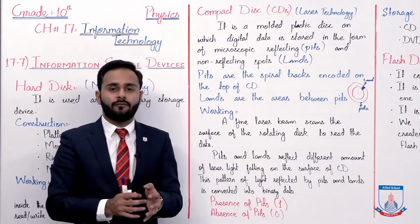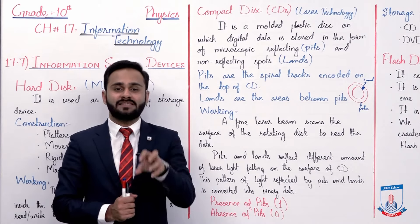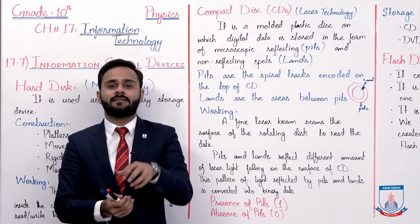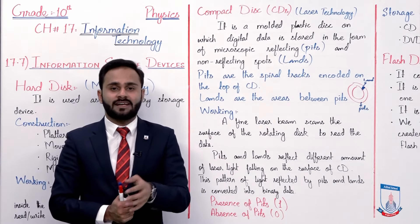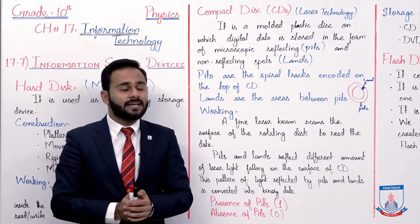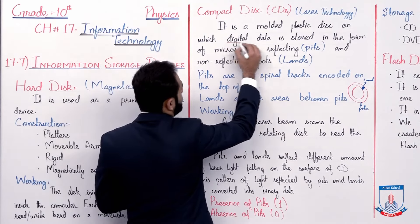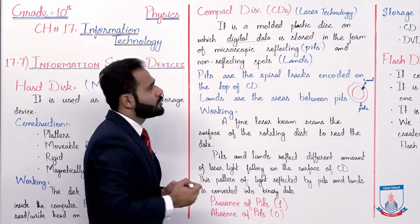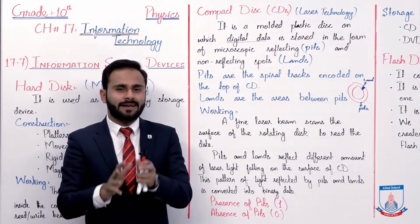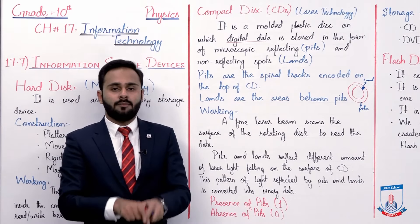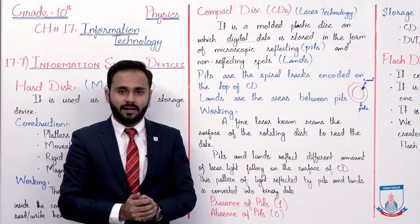Woh jo binary data hai woh 1 aur 0 ki form mein hai, toh usse further information extract ki jaati hai. Basically woh information aapko provide kar raha hai ki is CD ke andar data store hai, kyunke computer jo hai woh binary form ko read kar sakta hai — means ke 1 aur 0 ko. That's why ise hum kehte hain ke disk ke upar digital data store hota hai. I hope ab aapko clear ho gaya hoga ki disk mein data kaise store hota hai aur hum us data ko kaise extract karte hain by using laser technology.